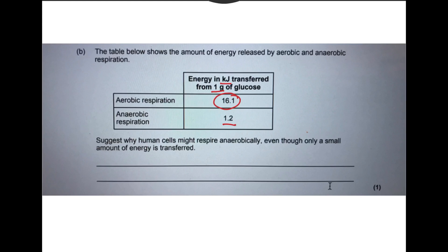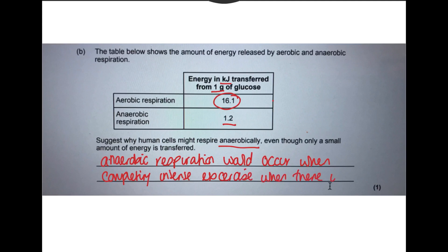So it suggests why human cells might respire anaerobically, even though only a small amount of energy is transferred. So we can see that aerobic respiration produces far more than anaerobic. So why would anaerobic be used? Well, anaerobic be used when we're in a position when we're not getting enough oxygen. So that would be something like really extreme exercise. So anaerobic respiration would occur when completing intense exercise when there is not enough oxygen.